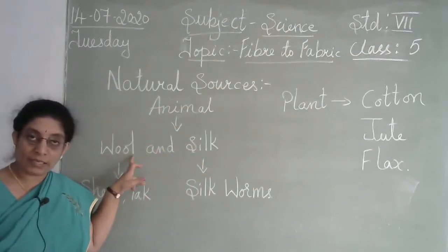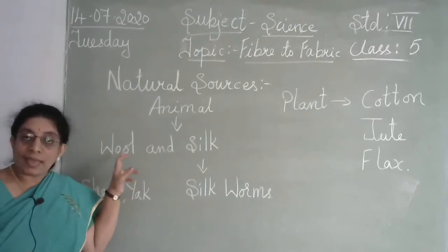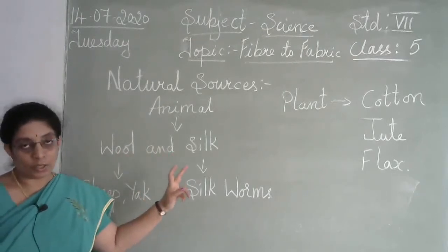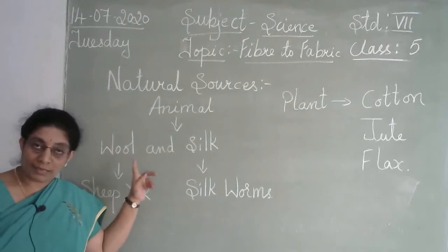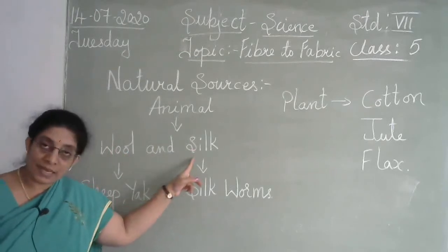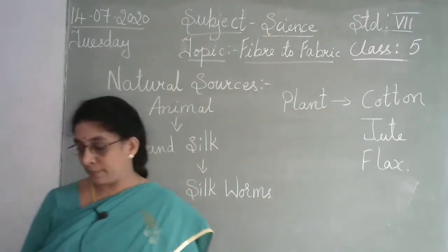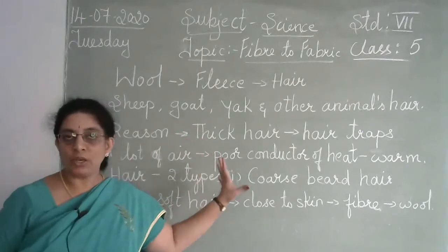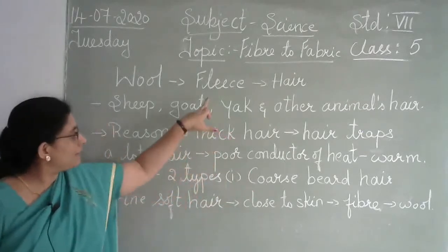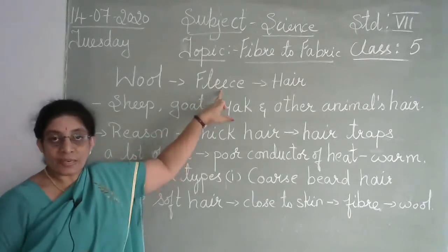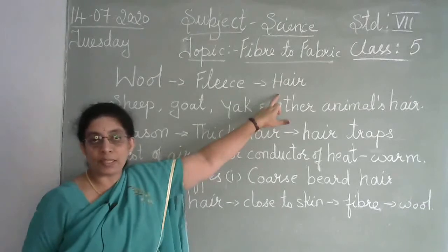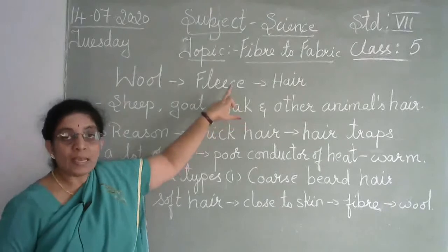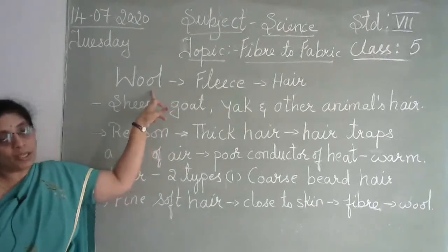We will read in detail how silk is obtained and what is the procedure to make silk, as well as wool from animals. Wool is also called fleece — fleece is the hair which covers the animal's body. From this fleece they manufacture the wool.